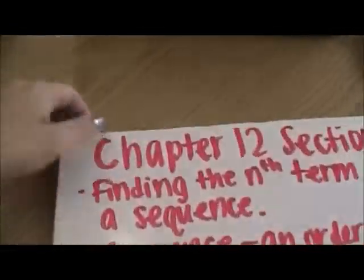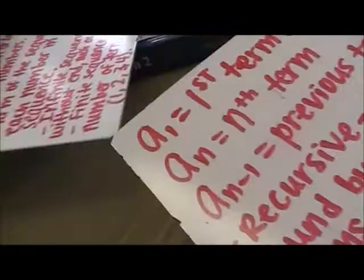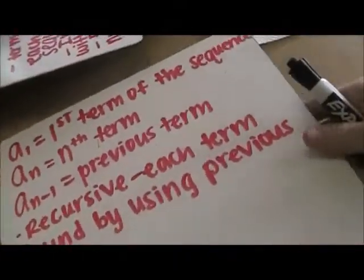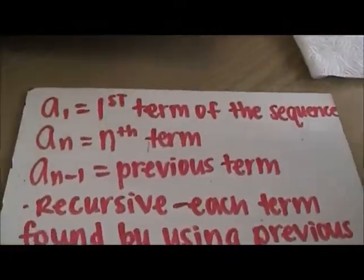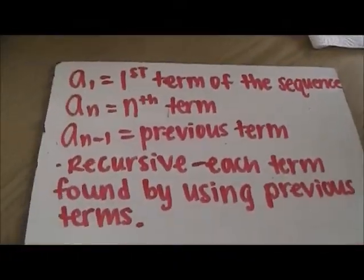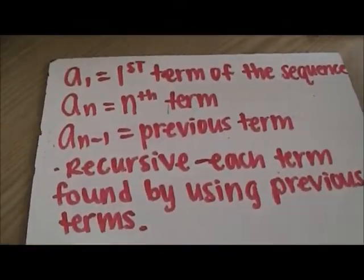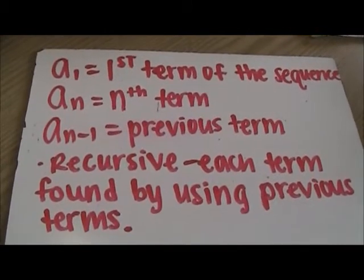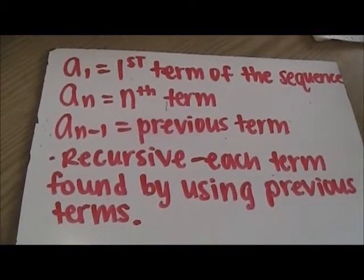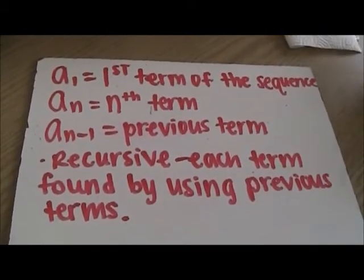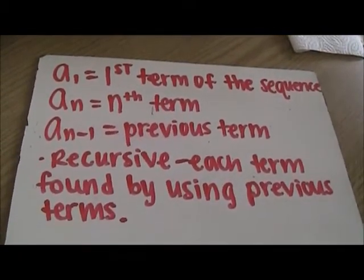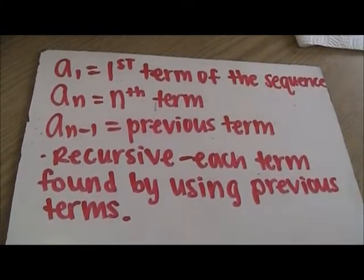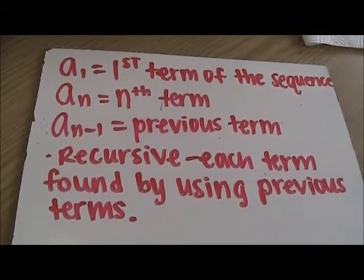There are two types that we are going to show you how to do, and they are recursive and explicit. Recursive is each term found by using previous terms, which is the one we're going to show you first. But before we do that, you must know some of the terms.